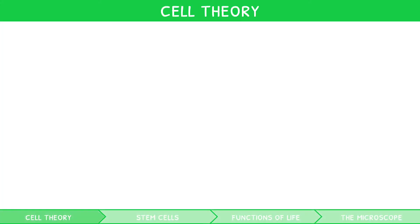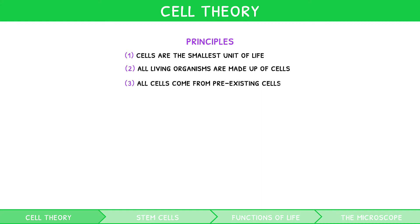The cell theory describes the cells found in all living organisms. It has three key principles: cells are the smallest unit of life, all living organisms are made up of cells, and all cells come from pre-existing cells. All cells are considered to follow these three rules.